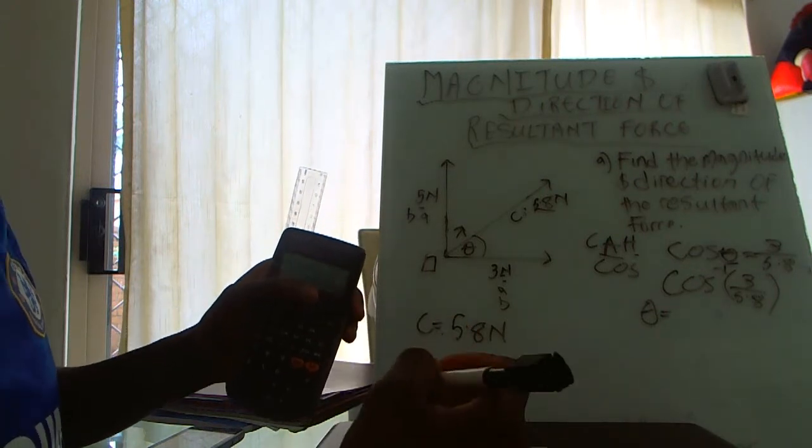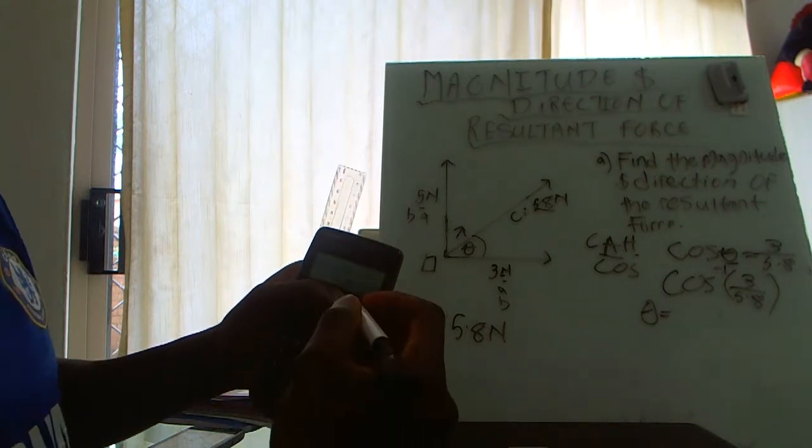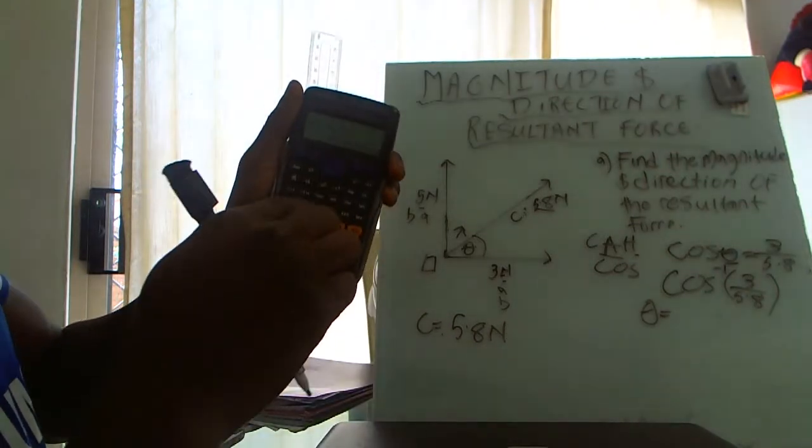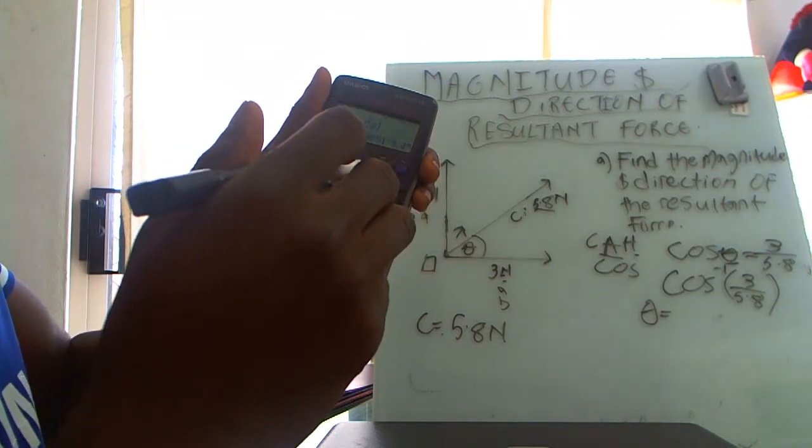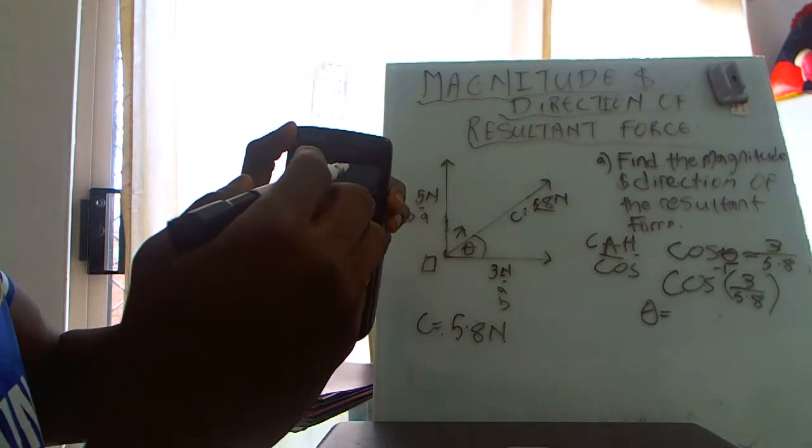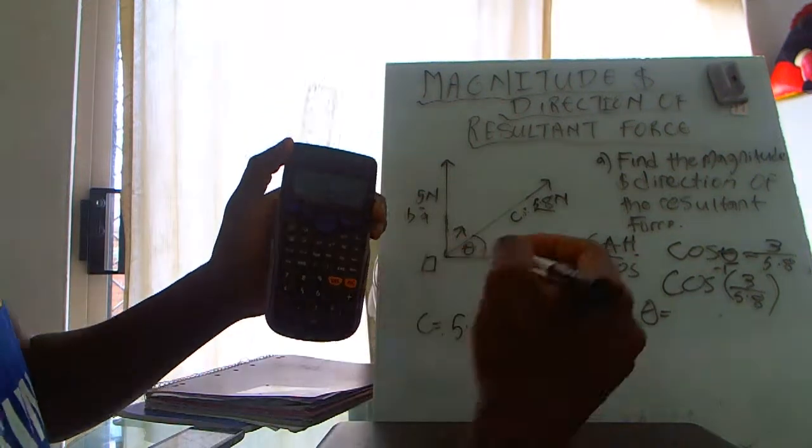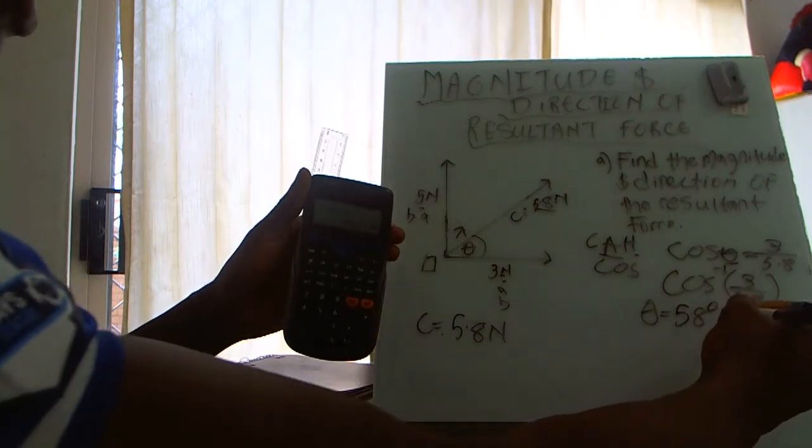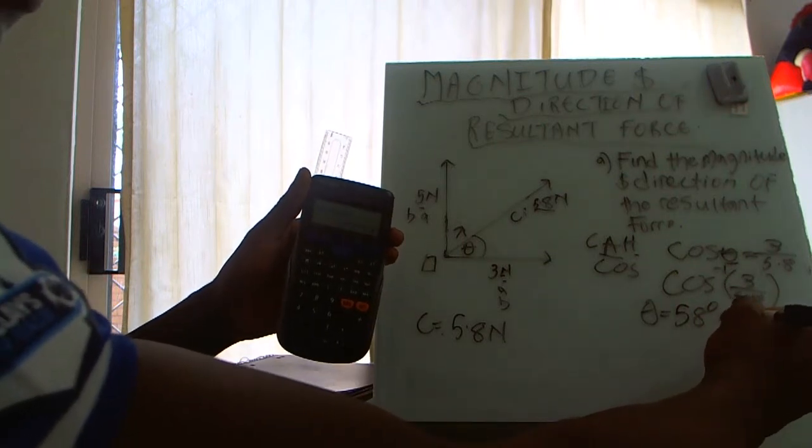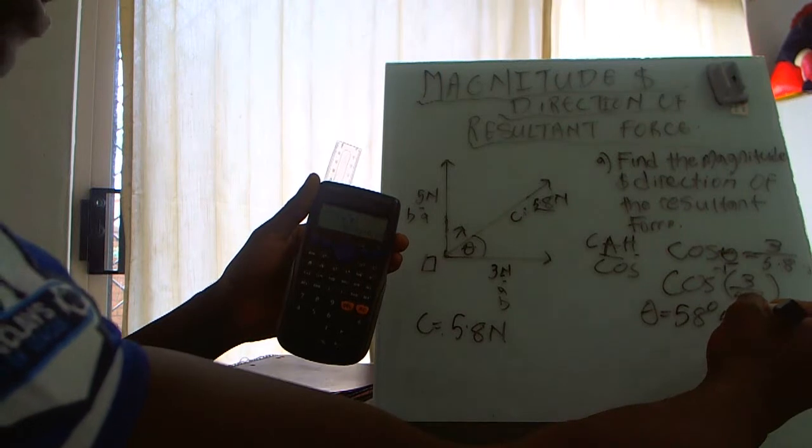We can put that in one decimal place and it'll be 58.9. But you could press this button to give you the angle in degrees and minutes, and it gives me 58 degrees 51 minutes.